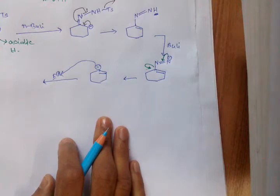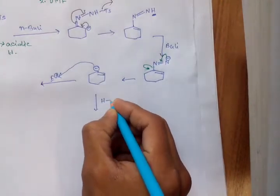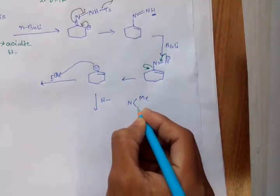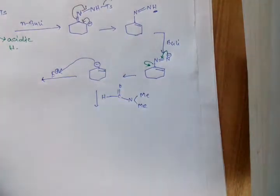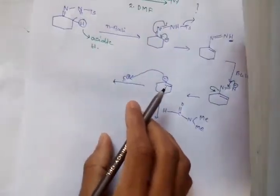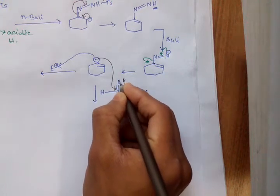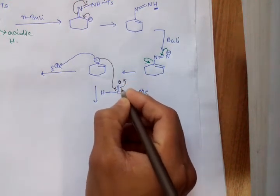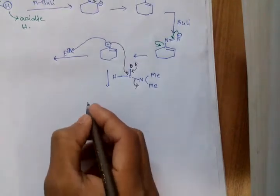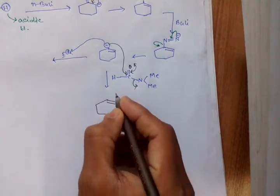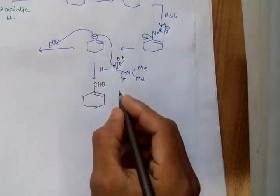This species acts as a nucleophile. In our problem, the electrophile is DMF — dimethylformamide. The negative charge attacks DMF, the C=O bond opens up, oxygen gets a negative charge, and then comes back. So we get a system with an aldehyde group — this product forms in the Shapiro reaction.